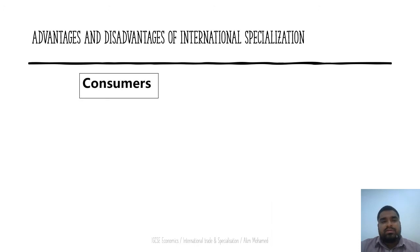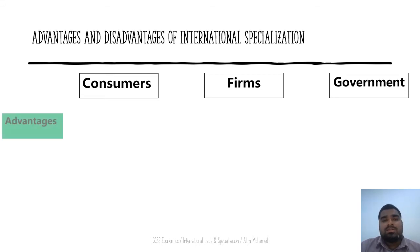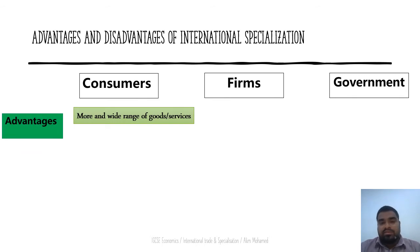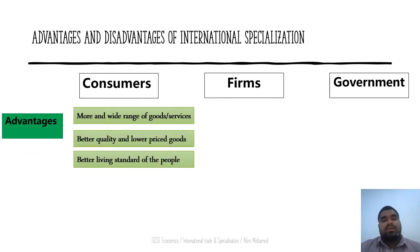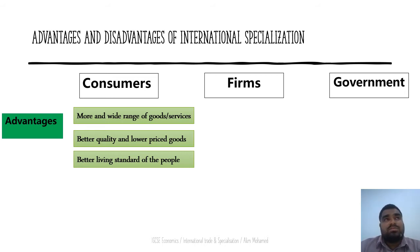Let's discuss the advantages and disadvantages of international specialization. An advantage for consumers is that consumers all over the world will get a range of different goods from different countries, and these goods will generally be of higher quality because countries that specialize become more efficient.